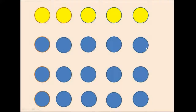But the thing is, we wouldn't know exactly which ones would be the ones who would get the disease. For example, instead of these 5, it could be any other 5 from the 20. Therefore, we could say that overall, each individual would have a 25% chance of developing that disease.